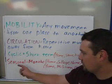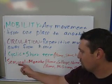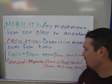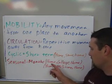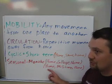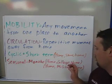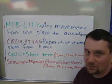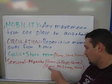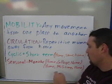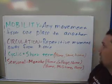Another type of circulation mobility is known as seasonal, and that can last for months. An example would be a college student going from home to their college town and then back home for the holidays or summer. Another example would be a soldier going from home to the military and then back home again.